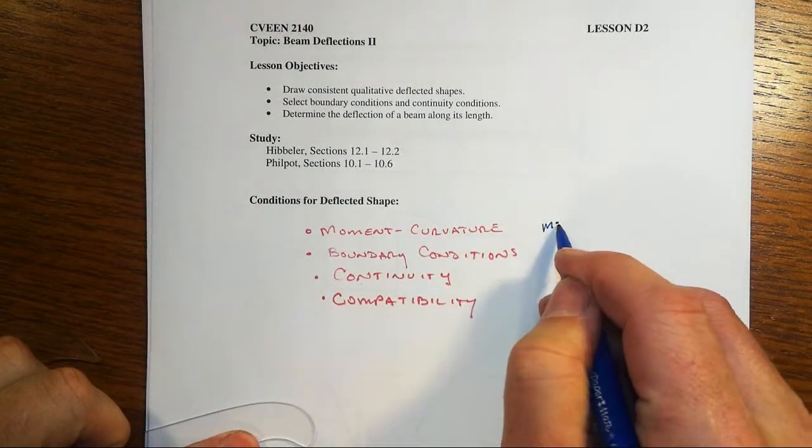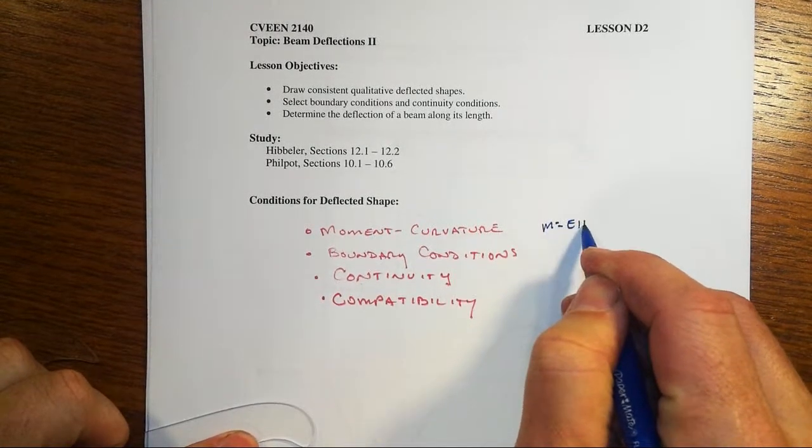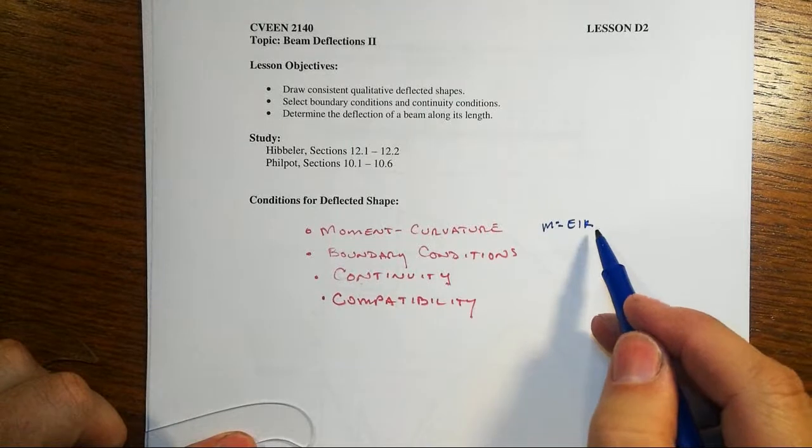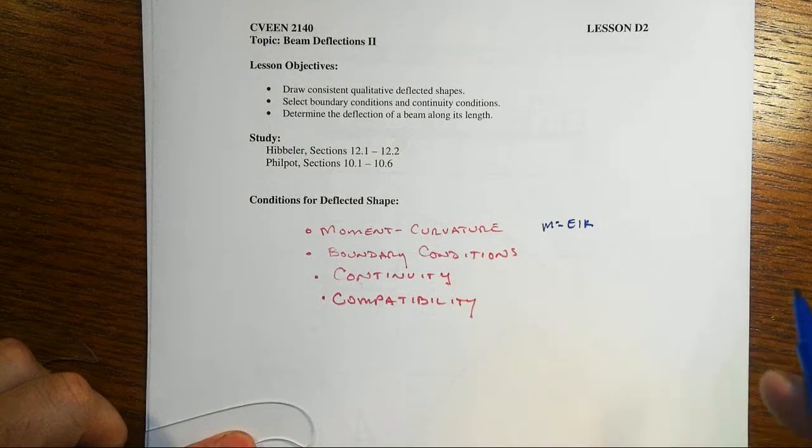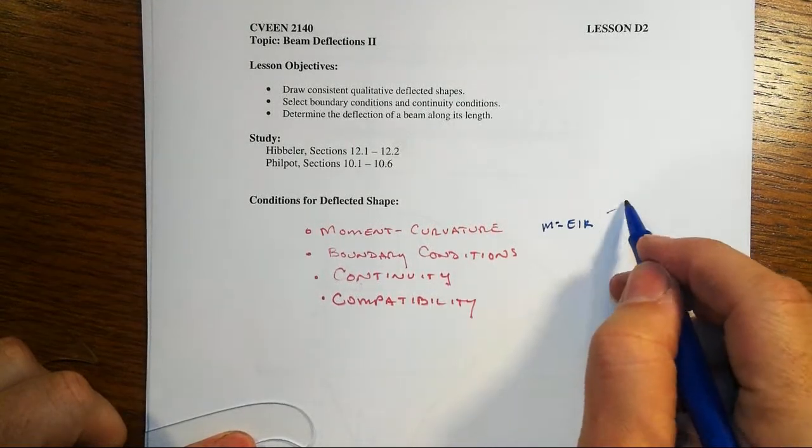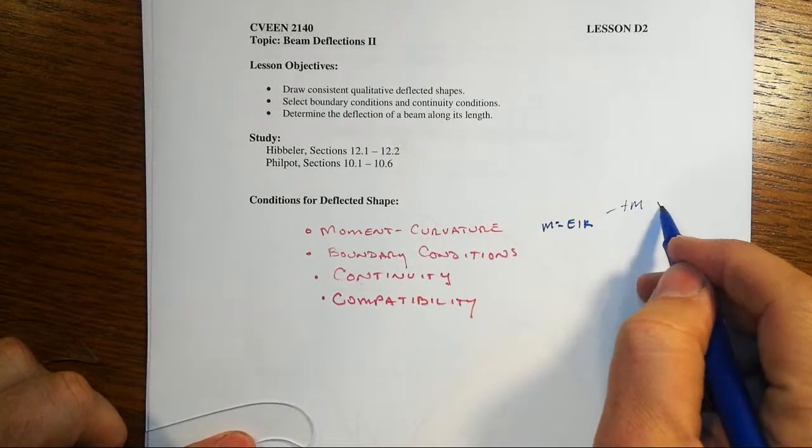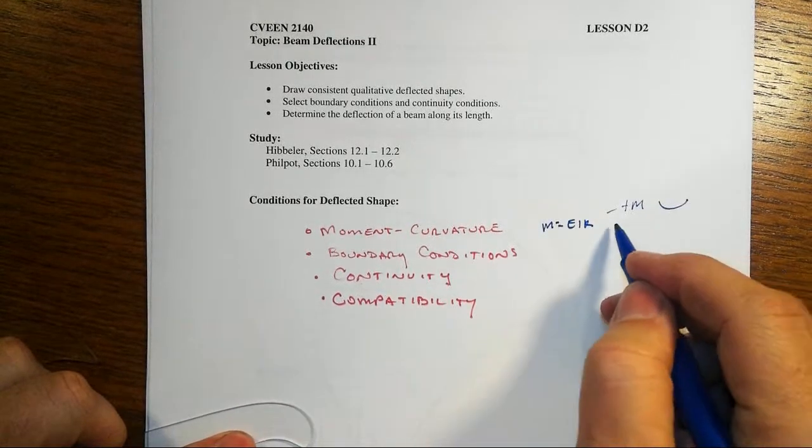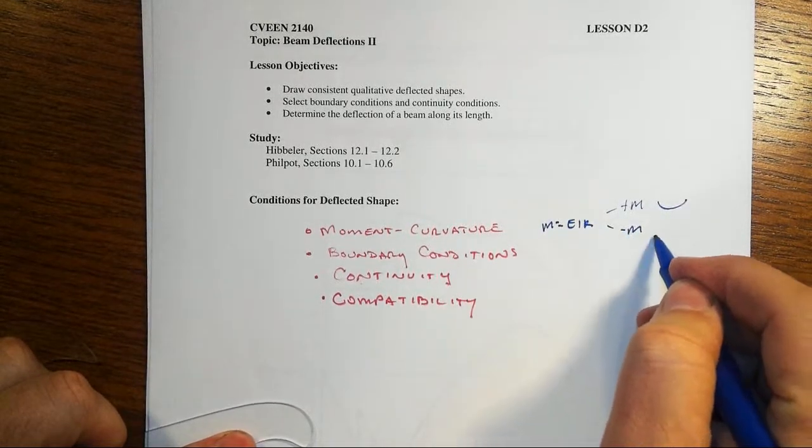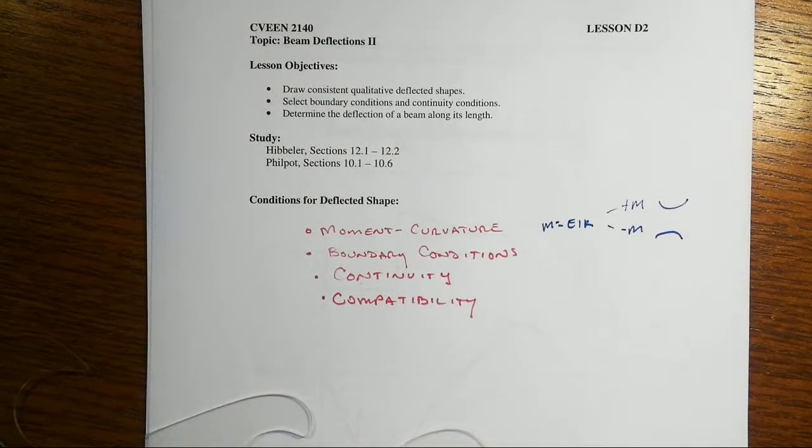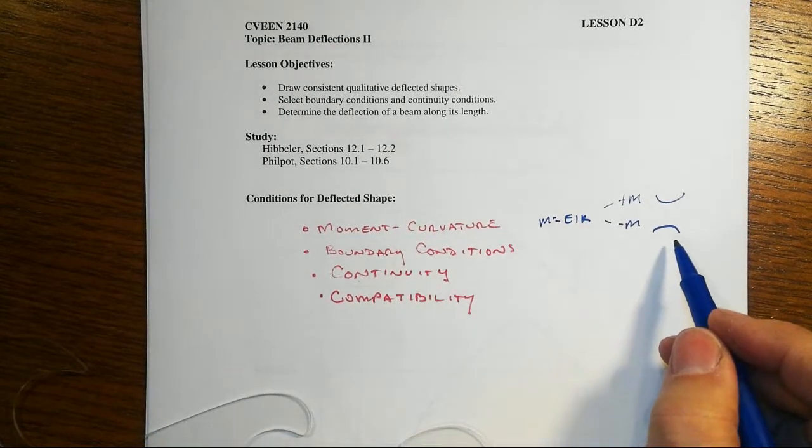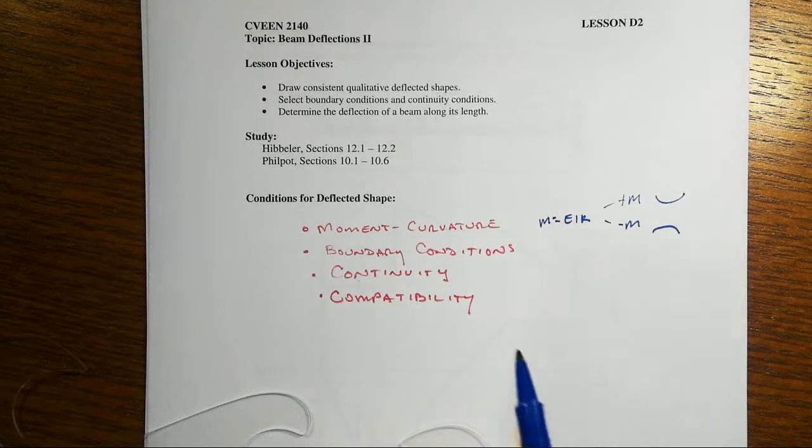That's, of course, M is equal to EI kappa, where kappa is that concave up or concave down. Now, in the American Design Convention, of course, positive moment means smiley face up or concave up, and negative moment means frowny face or concave down, sometimes called hogging curvature, H-O-G-G-I-N-G.